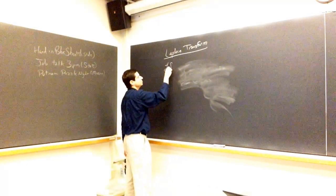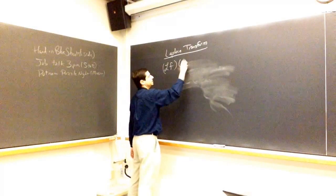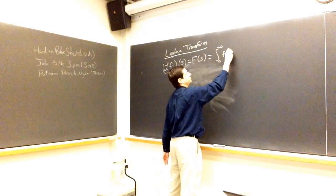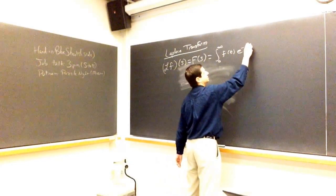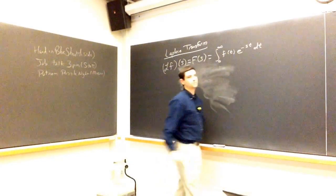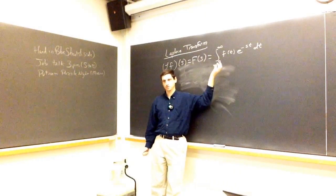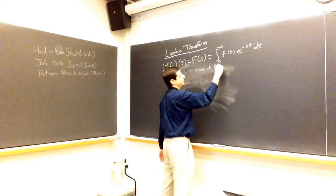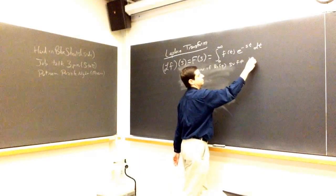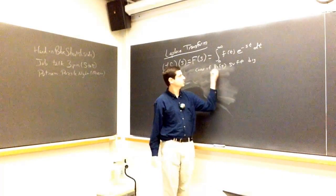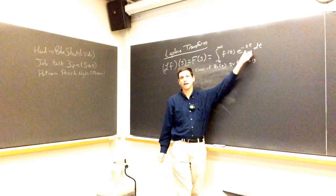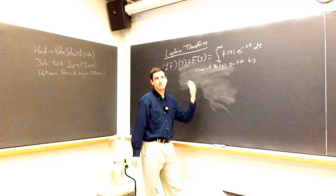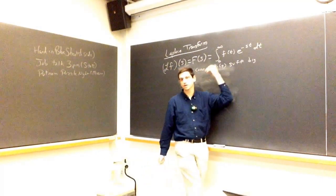Let's recall the Laplace transform of some function f at s — we'll write big F(s). It's the integral from 0 to infinity of f(t) e^(−st) dt. You need some conditions so that this converges. We'll say it converges if the real part of s is sufficiently large. The larger the real part of s, the more exponential decay you have as t goes to infinity. Maybe we also have some continuity and growth assumptions on f.